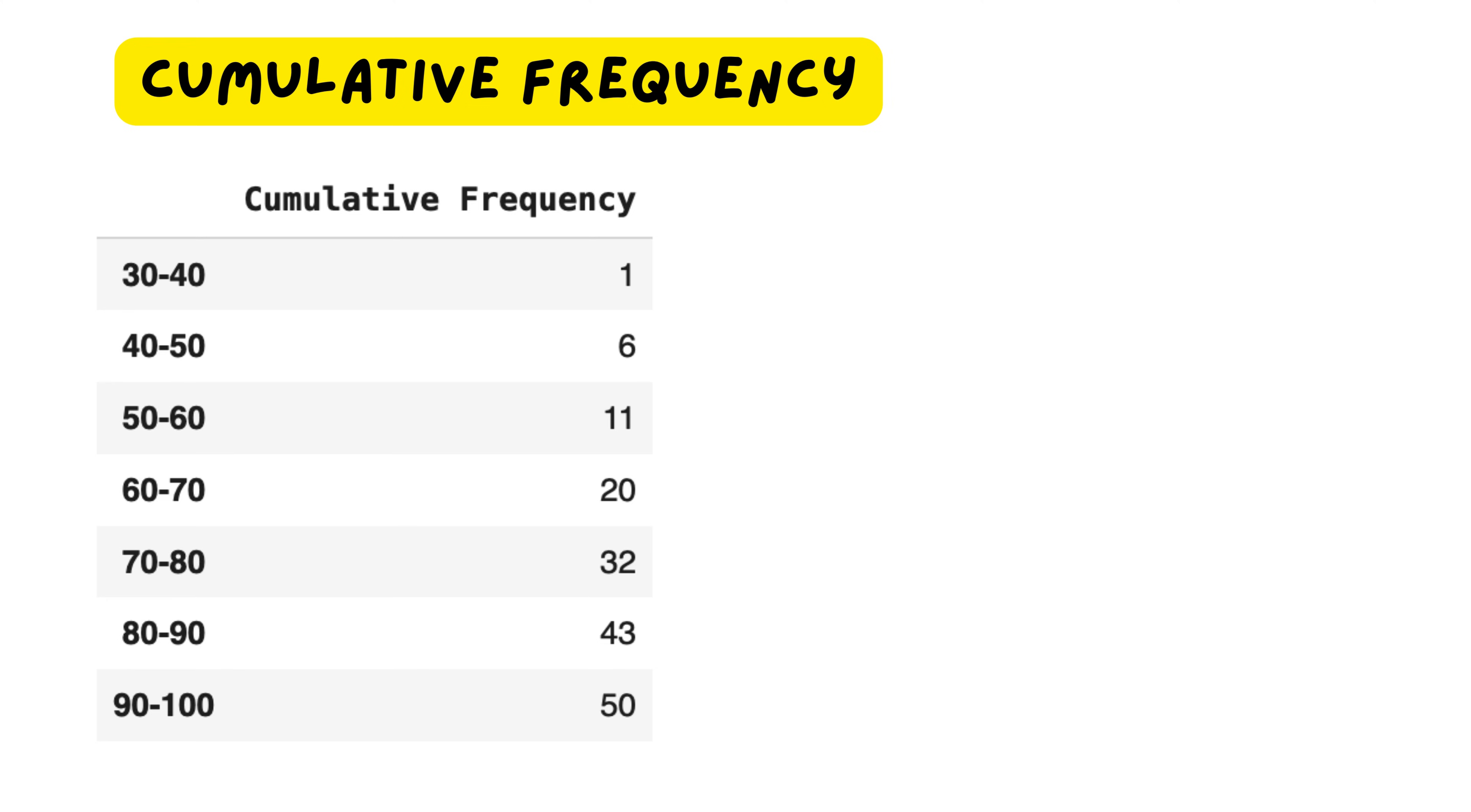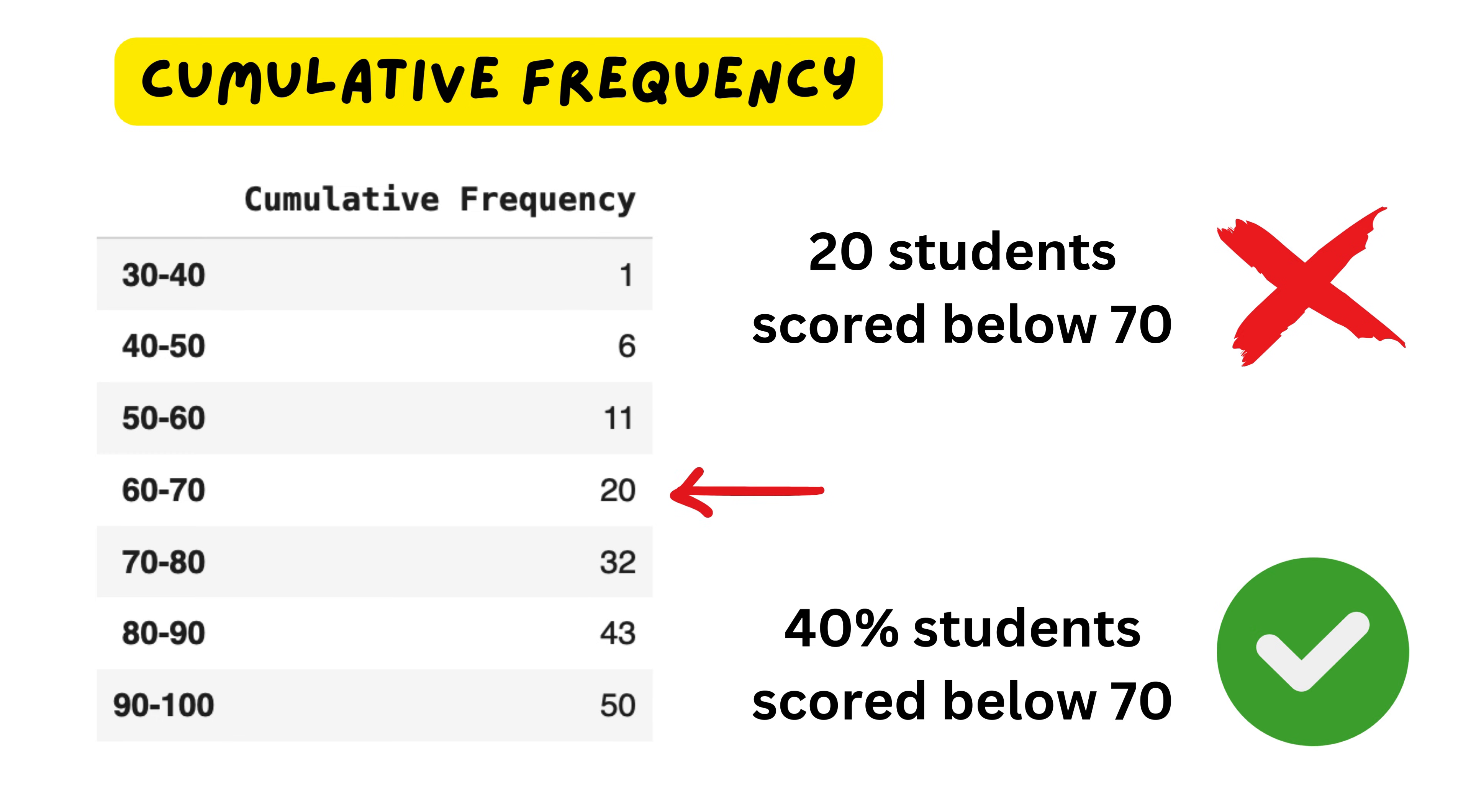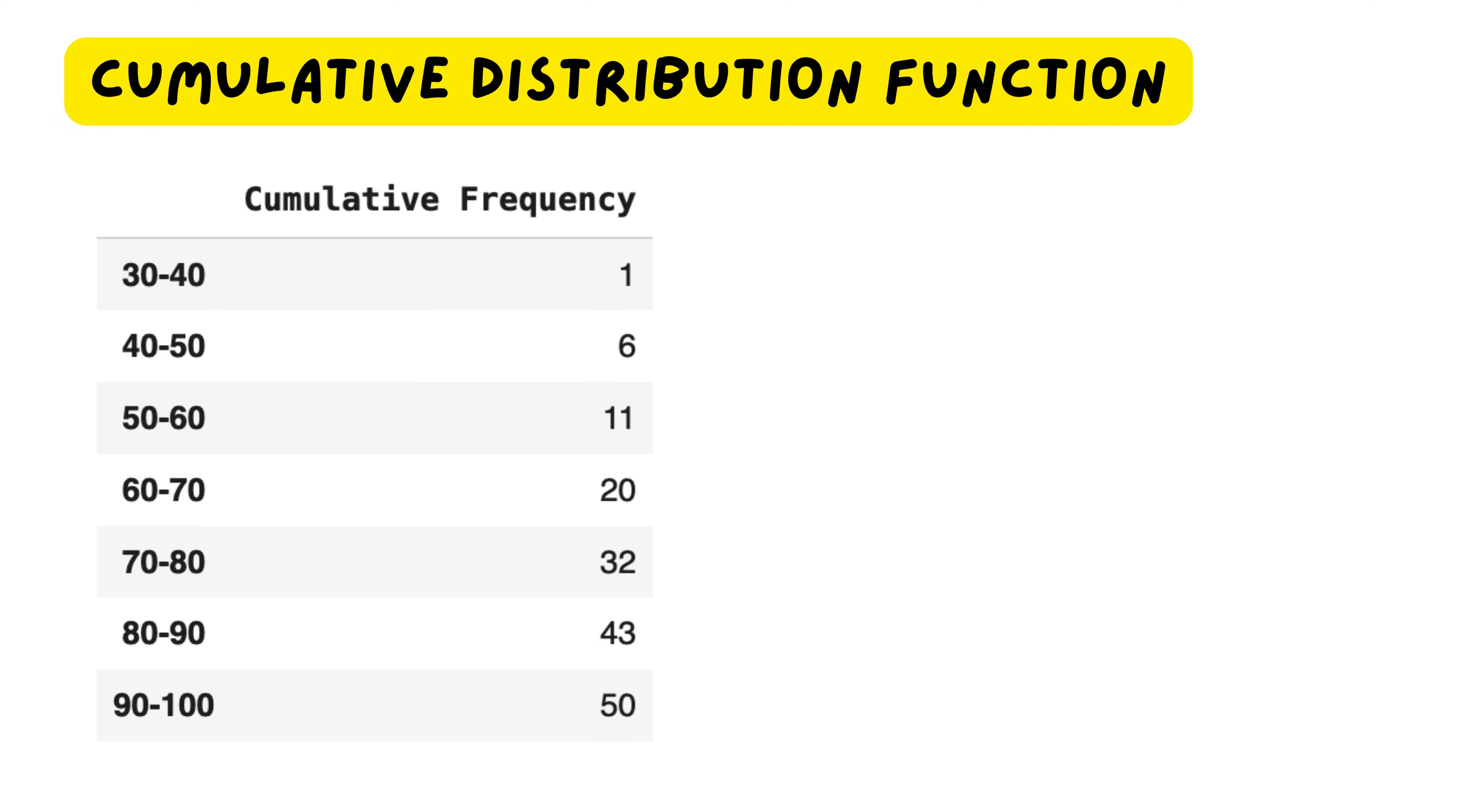Now, instead of just knowing how many students scored below a mark, what if we want to express this as a probability? Instead of saying 20 students scored below 70, we might want to say, for example, 40% of students scored below 70. This is where the cumulative distribution function, or CDF in short, comes into the picture. To calculate it, we take each cumulative frequency and divide it by the total number of students. It will become like this.